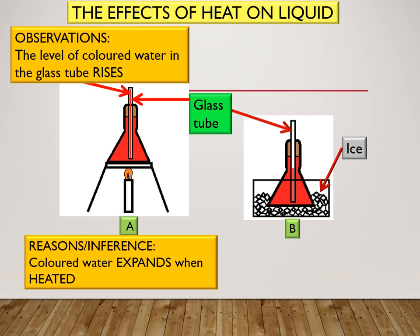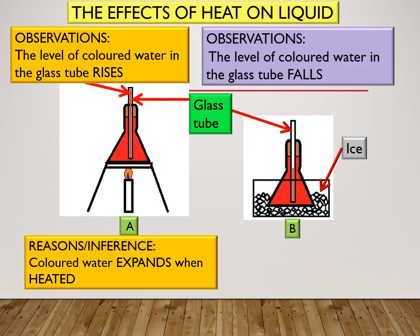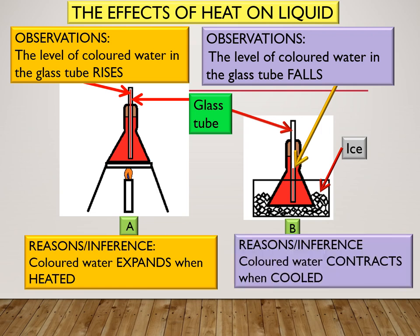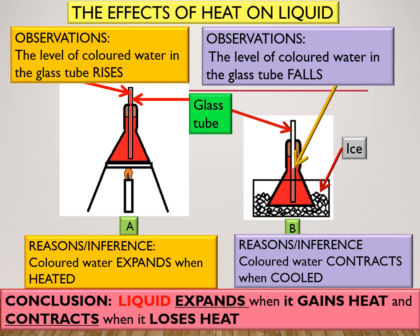The reason or inference is colored water expands when heated or when it gains heat. For conical flask B, the level of the colored water in the glass tube falls. The reason or inference is colored water contracts when cooled or when it loses heat. The conclusion is liquid expands when it gains heat and contracts when it loses heat.